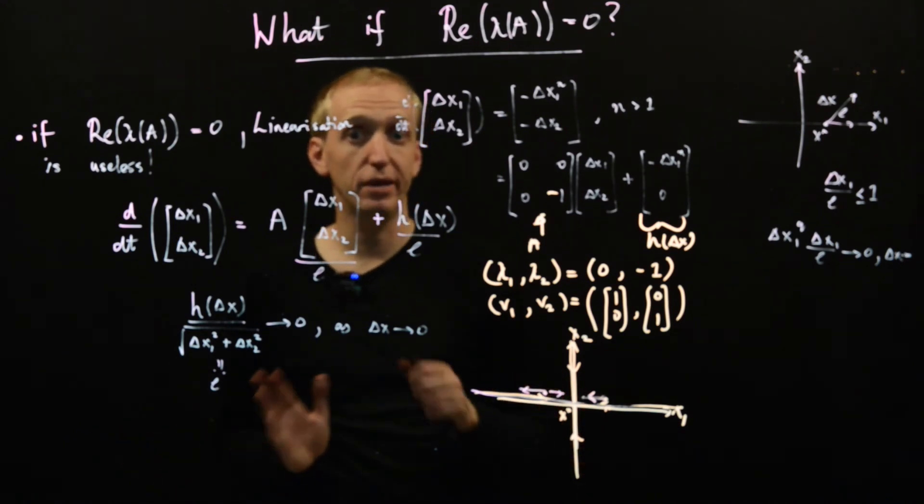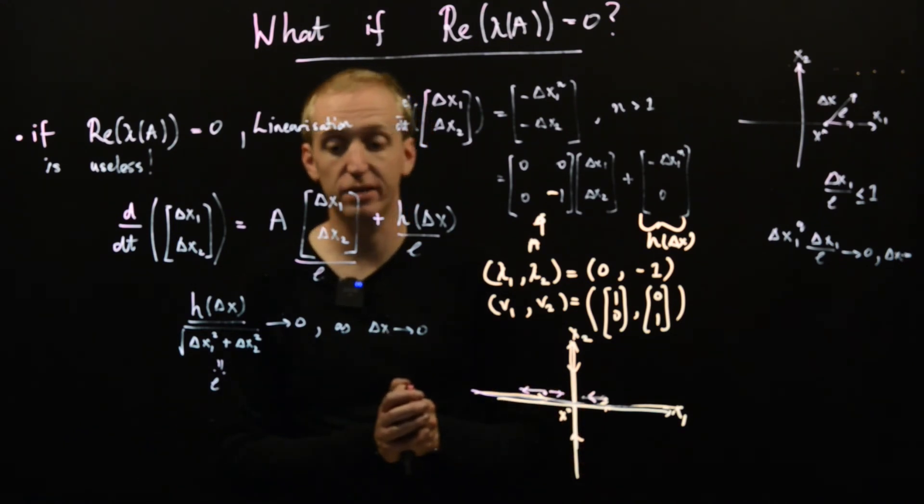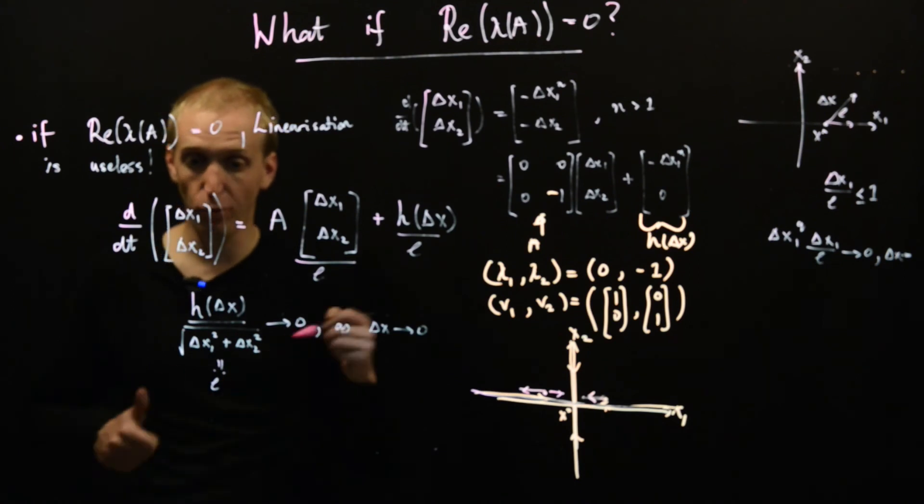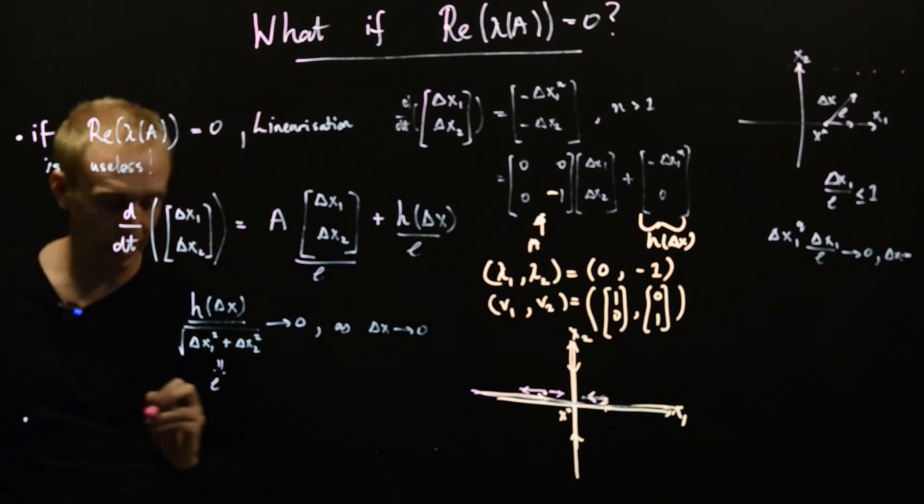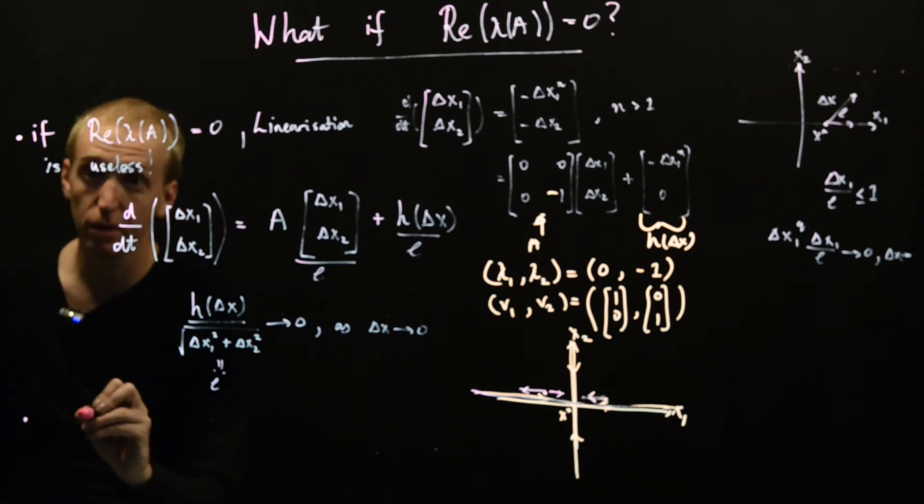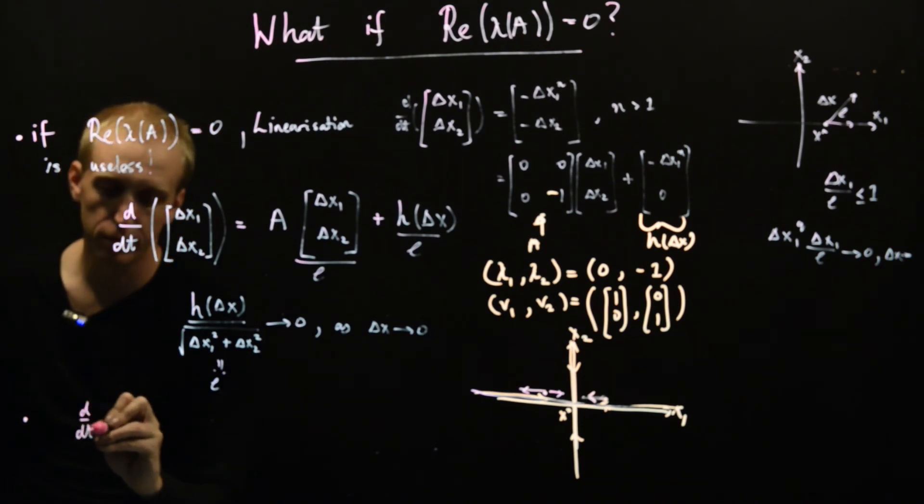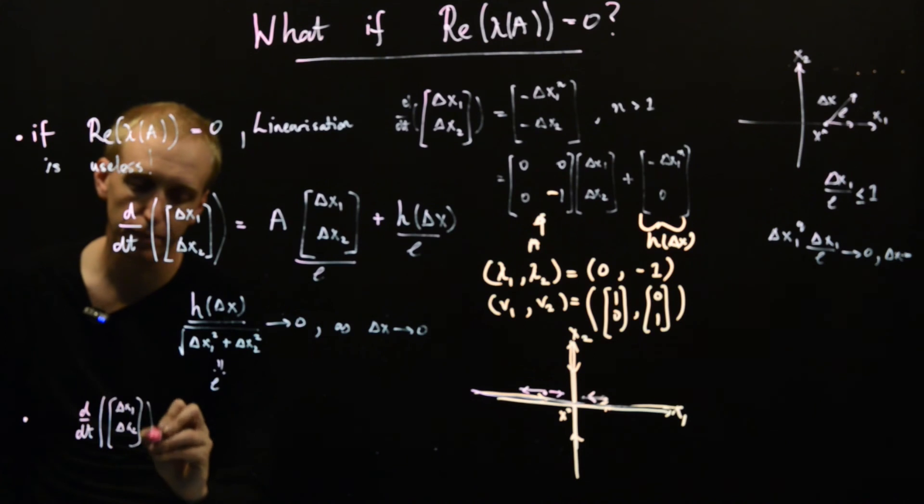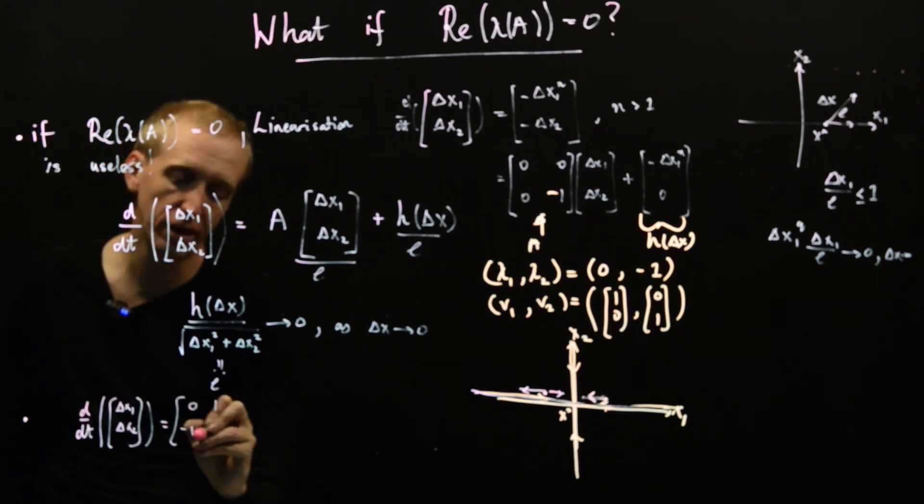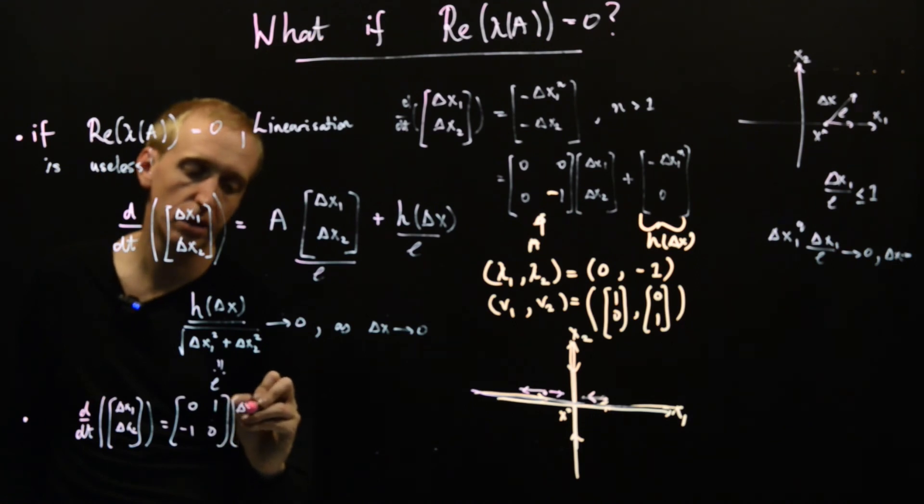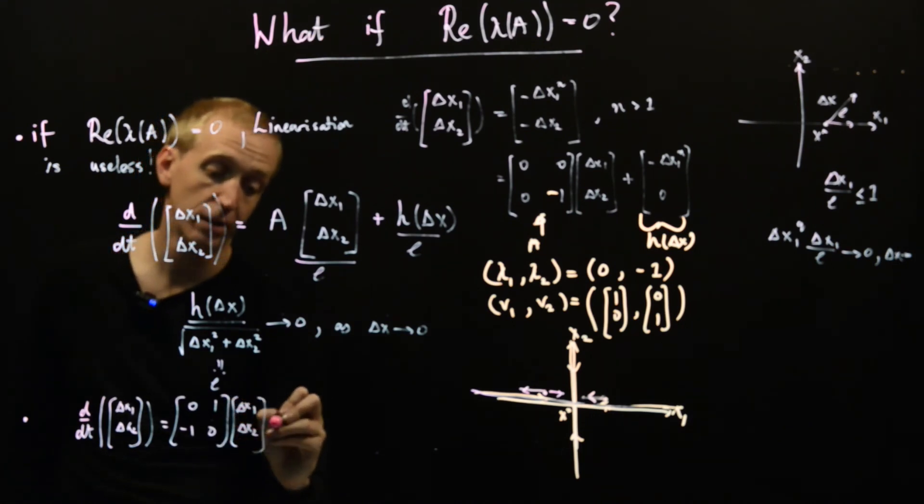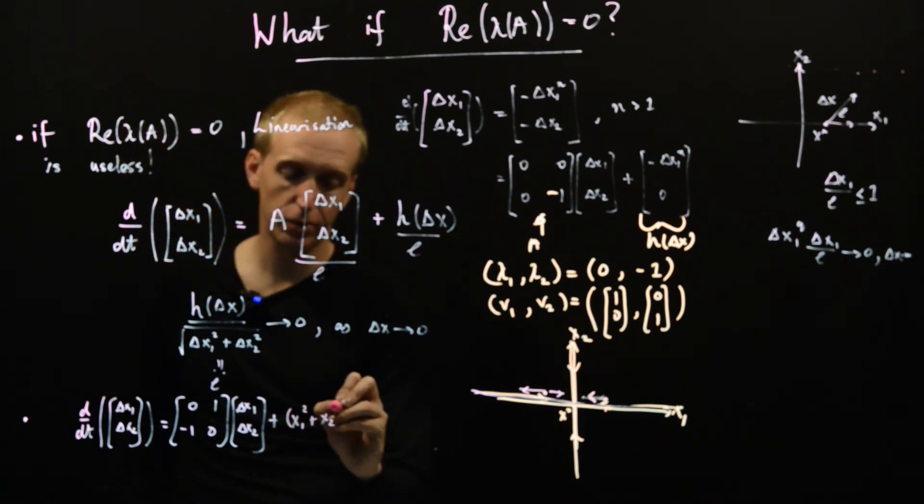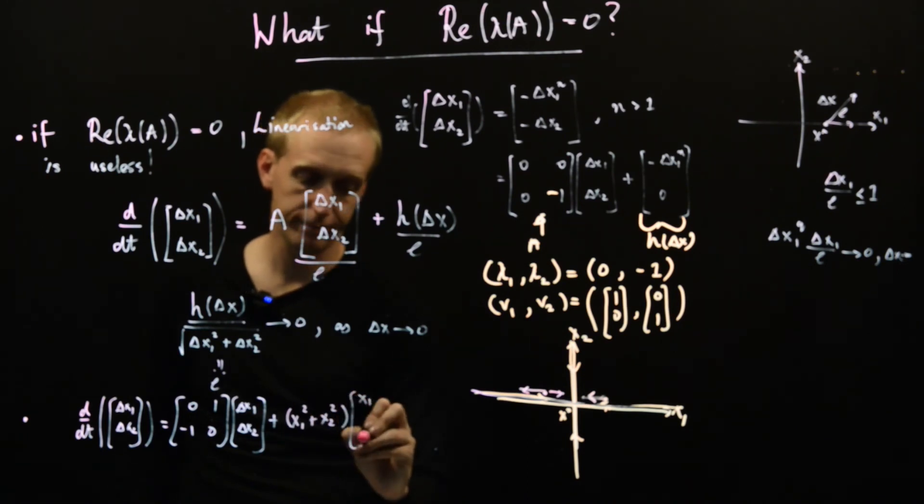And the same thing will happen if you have eigenvalues on the imaginary axis. The examples are a little bit harder to construct, but to give you the general form. So a good set of examples to look at is given by the system of x1 d by dt. And here, you have delta x1, delta x2, and then you have 0, 1, minus 1, 0, delta x1, delta x2.